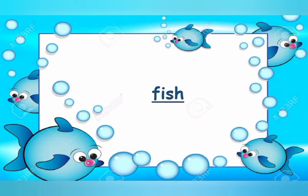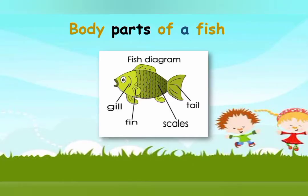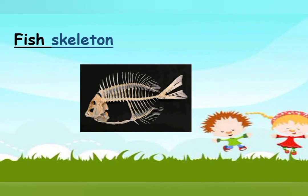Let's move to the next topic, i.e. fish. Students, some fish live in fresh water like lakes and rivers, and some fish live in salty sea water. Mahseer, brown trout, sardine and black marlin are some kinds of fish. You can see the body parts of a fish on your screen. There are gills, fins, scales and tail. جس طرح ہم ناک کے ذریعے سانس لیتے ہیں، اسی طرح fish اپنے gills کے through سانس لیتی ہے. Gills کو اردو میں گِلپھڑے کہتے ہیں. Fish میں بھی ایک bone کا structure ہوتا ہے that is called skeleton.